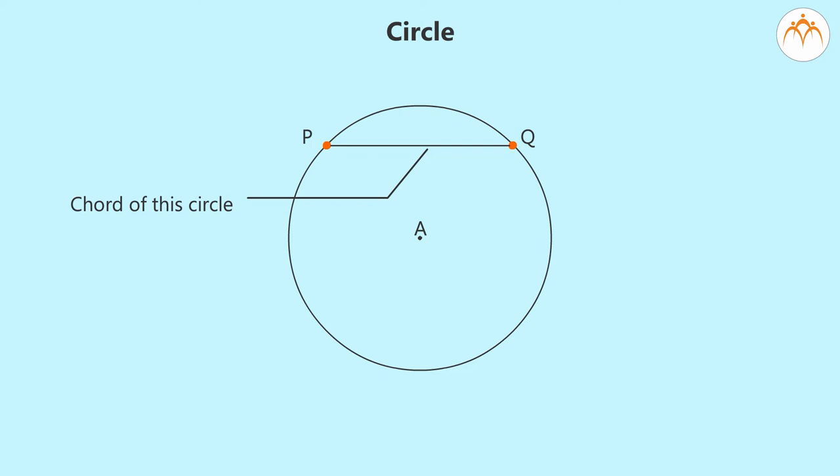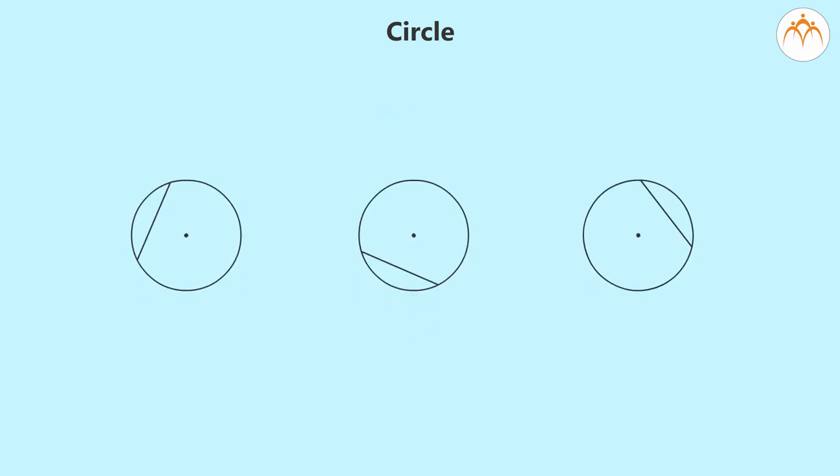In general, a straight line segment joining any two points on the circle is called chord of the circle. For example, all of these are chords of the circle.